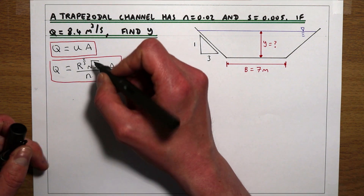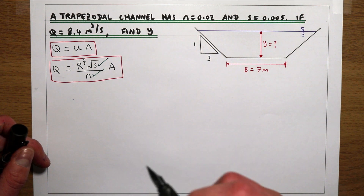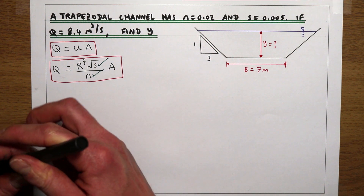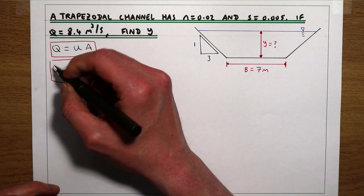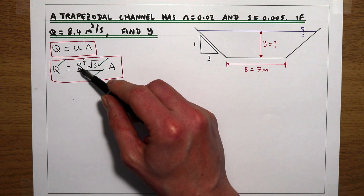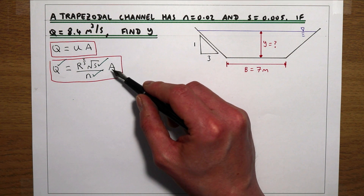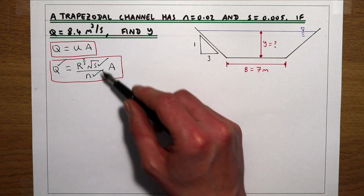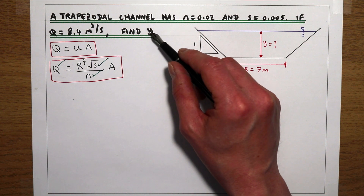We know the longitudinal slope and the roughness, as those are given in the question. We don't know the hydraulic radius or the cross-sectional area. What we need to do — since we also know Q — is define the hydraulic radius and the cross-sectional area so that the only unknown in the equation is our flow depth Y.